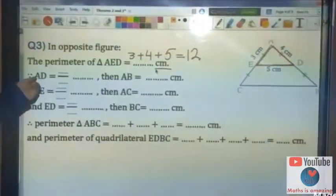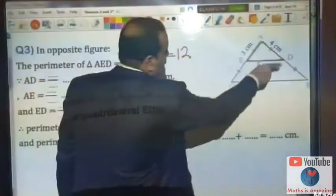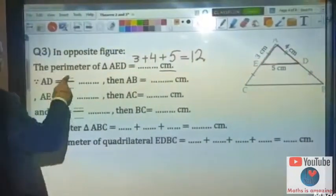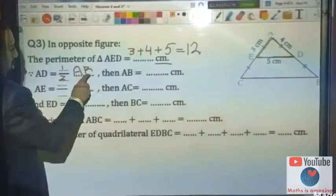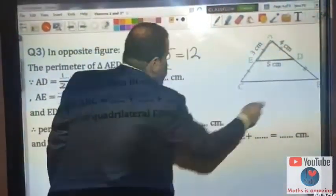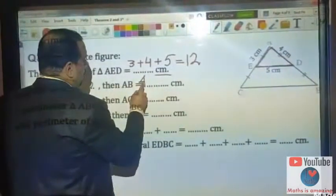Since AD is half of AB, then AD equals half of AB. Then AB equals 4 times 2 or 8.